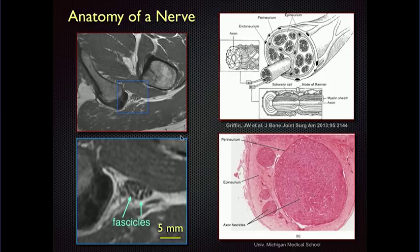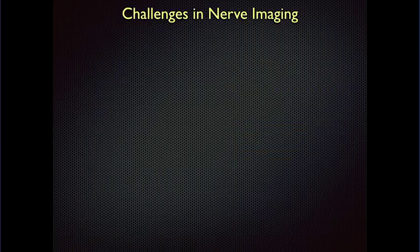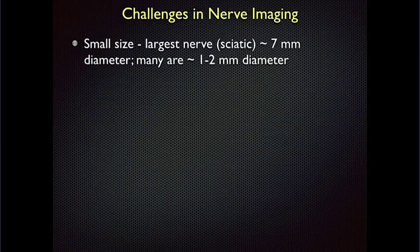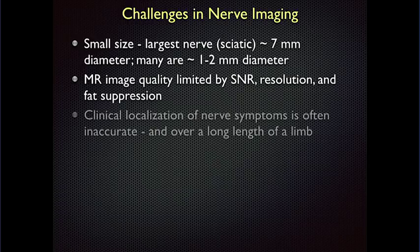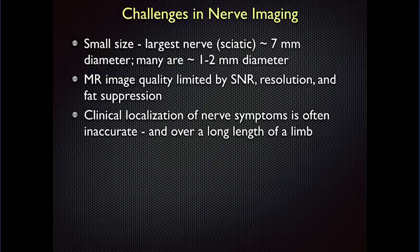The tricky thing about nerve imaging is that a lot of these nerves are small. Even the sciatic nerve is only about 7 millimeters in diameter, but many peripheral nerves are 1 to 2 millimeters in size, making them very difficult to localize. MR is typically limited by signal-to-noise, resolution, and the quality of fat suppression. Clinically, it's often hard for a clinician to localize where symptoms are coming from — it could be anywhere from the hip to the ankle. We have the challenge of imaging a really long area or working closely with clinicians to target the exam.